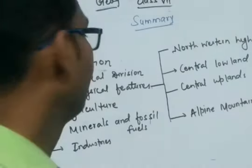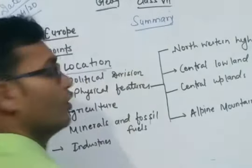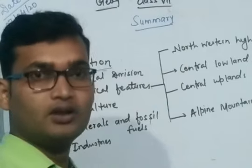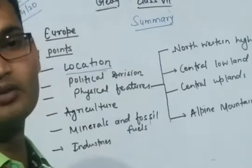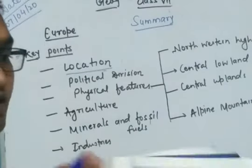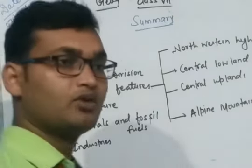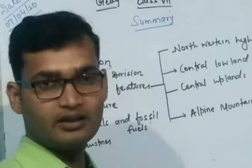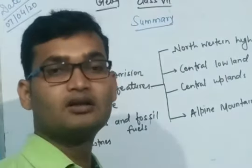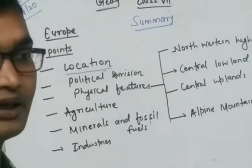The next chapter is Europe. Regarding its location, most of Europe lies in the northern hemisphere, with parts in the western and eastern hemispheres — so it lies in the northeastern hemisphere. Europe is a peninsula continent because it is surrounded by water on three sides: the Arctic Ocean to the north, the Atlantic Ocean to the west, and the Mediterranean Sea and Caspian Sea to the south.